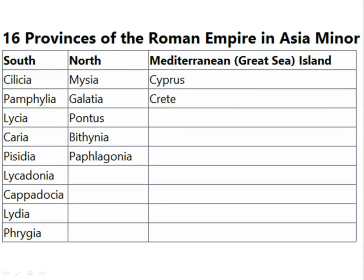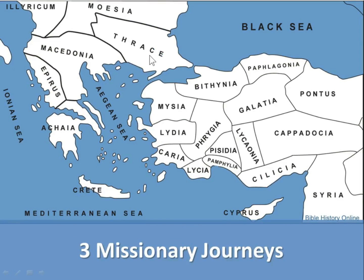Here are the 16 provinces of the Roman Empire in Asia Minor. To the south we have the southern provinces: Cilicia, Pamphylia, Mysia, Caria, Pisidia, Lycaonia, Cappadocia, Lydia, Phrygia. Then to the north: Mysia, Galatia, Pontus, Bithynia, Paphlagonia, and then Cyprus and Crete. Recall we saw them on this particular map.